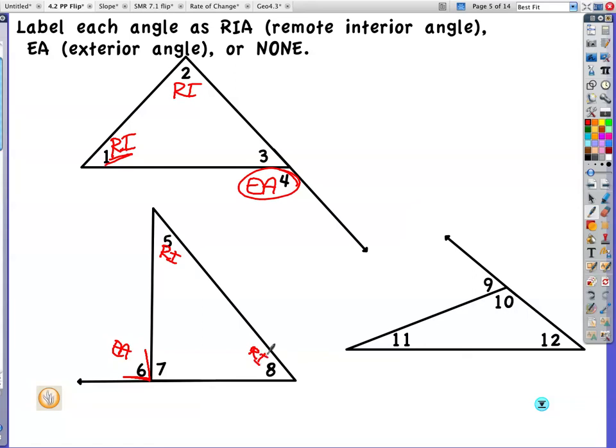This is my exterior angle. So this is my remote interior. This is my other remote interior. If you're having trouble with this, you can actually cut this out on pieces of paper and use them and study them until you get it. That's an exterior angle. So this is a remote interior. This is a remote interior angle. Oh, I'm just going to put RIA. Sorry. I'm sure you still got the idea. Remote interior angles.